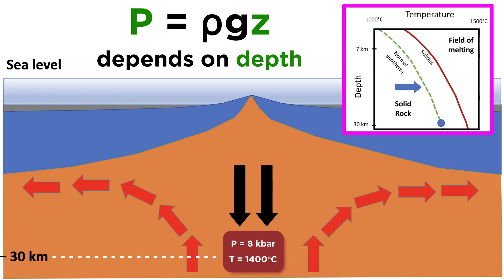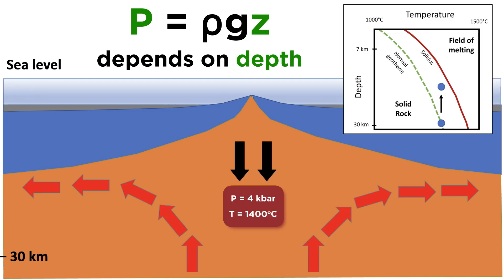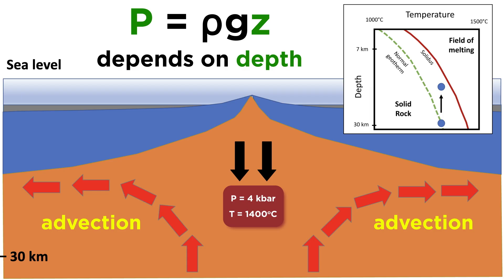The green dashed curve is the average geotherm, which shows how temperature changes with depth. The red solid line is the melting point of mantle rock. Notice how the two curves are nearly parallel — this illustrates the requirement for abnormal conditions to get the mantle to melt. As our mantle rock ascends, it experiences lower pressure, since there is now less mass above it. But notice that the temperature did not change — it is still 1400 degrees Celsius. This is an example of an adiabatic process, meaning heat has not been added or removed from the system. The rising motion of the mantle occurs at sufficient speed that we can assume that heat is not lost to its surroundings during ascent. Therefore, the key to decompression melting is the advection of hot material upward to a lower pressure environment.